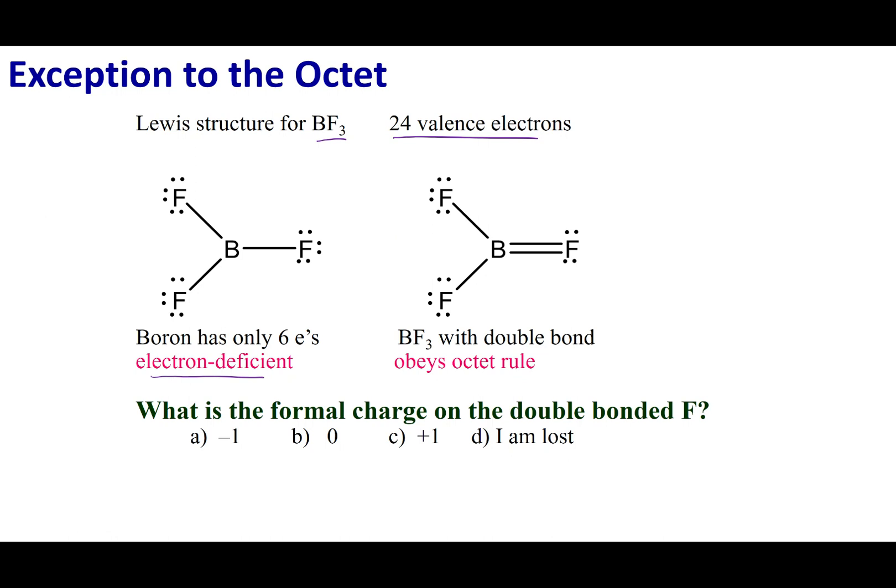One way is we obey the octet rule and have a double bond between the boron and the fluorine. The other way is we break the octet rule. You'll notice that boron here only has six electrons around it—two, four, and six—so it does not complete its octet.